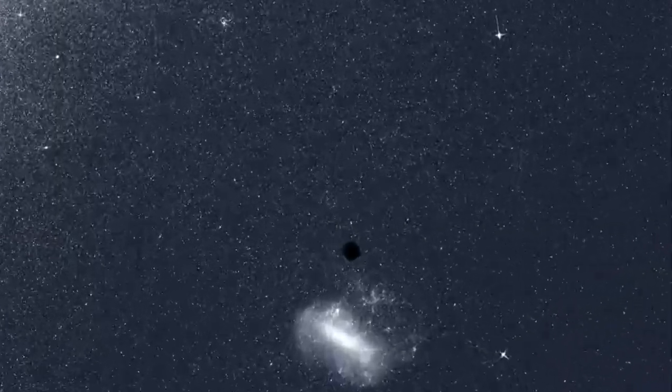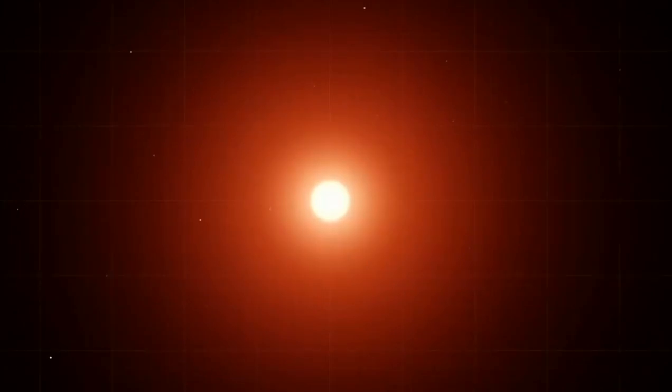One star where TESS saw transits is TOI 700. It's a red dwarf about 40% the mass and size of our sun, and roughly half its temperature.